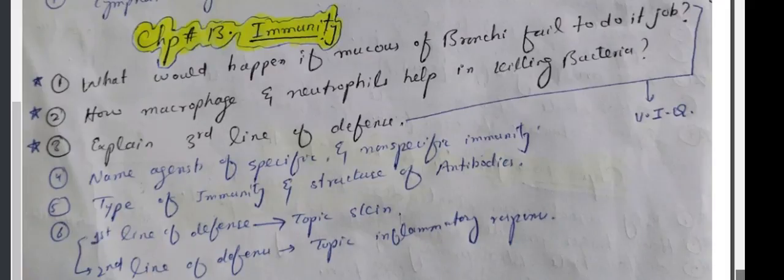Chapter 13. What would happen if mucus of bronchi fluid failed to do its job? How do macrophage and neutrophils help in killing bacteria? Explain third line of defense. Name agents of specific and non-specific immunity. Type of immunity and structure of antibodies. First line of defense and second line of defense.